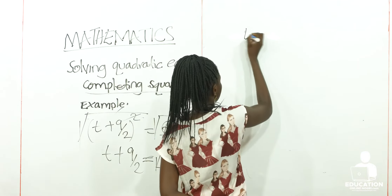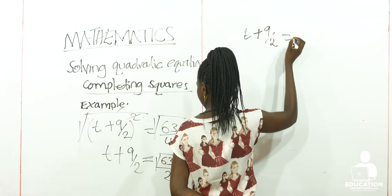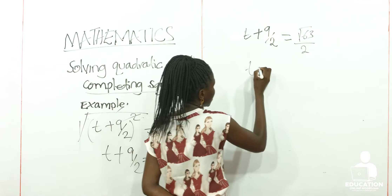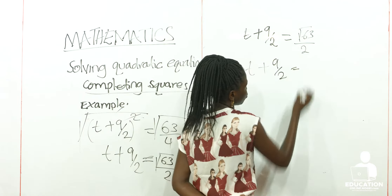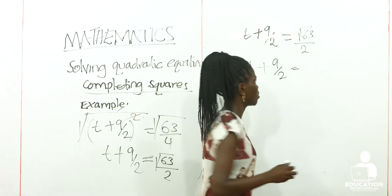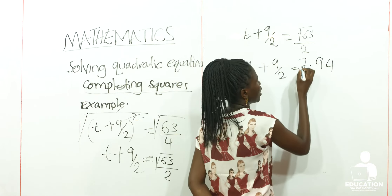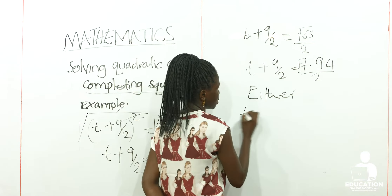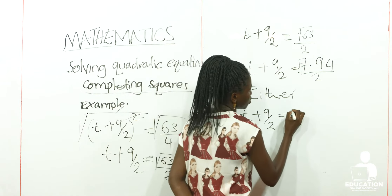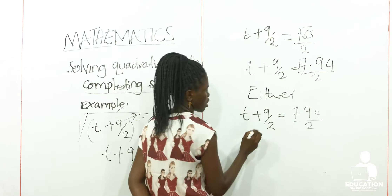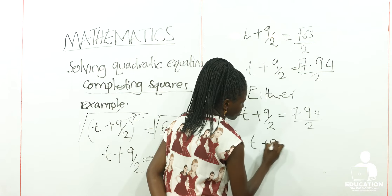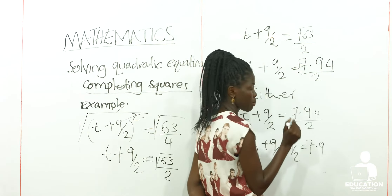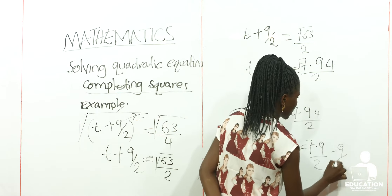So we are now going to have T + 9/2 is equal to root of 63, which we said is going to be 7.94. This is plus or minus over 2. So we are going to say it's either T + 9/2 is equal to positive 7.94 over 2. We can take to 1 decimal place: 7.9 over 2, minus 9 over 2.